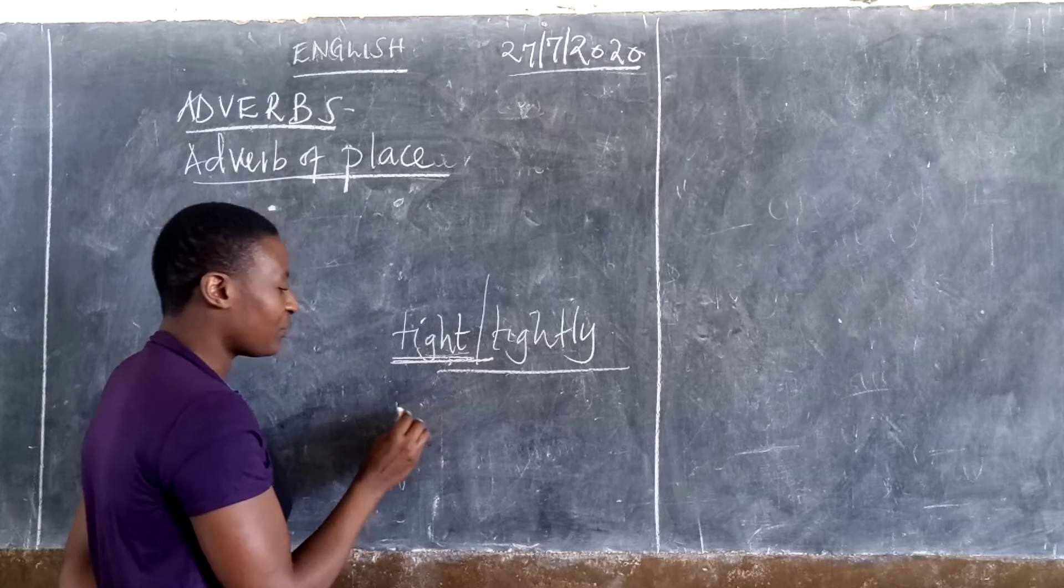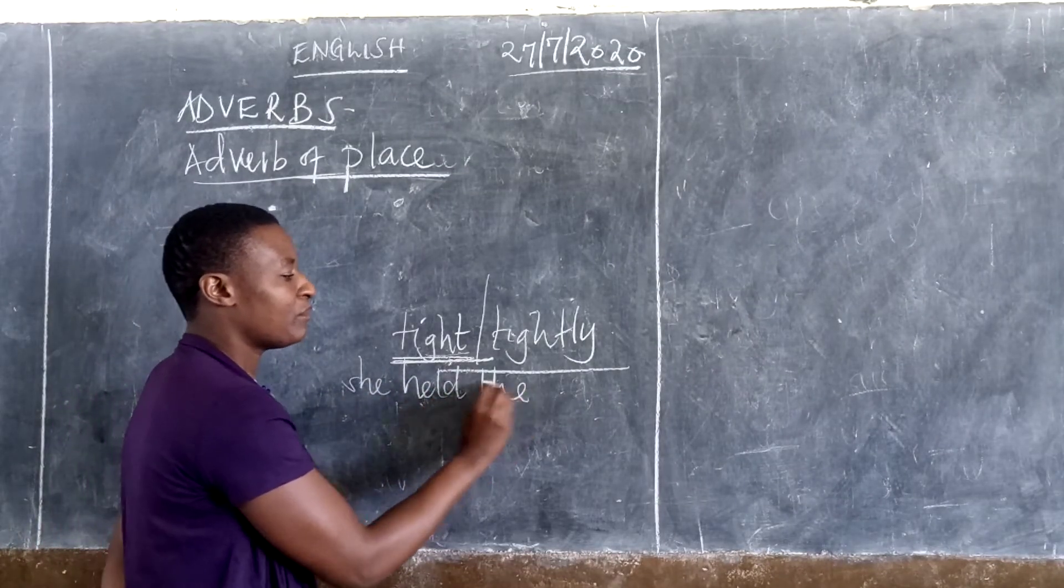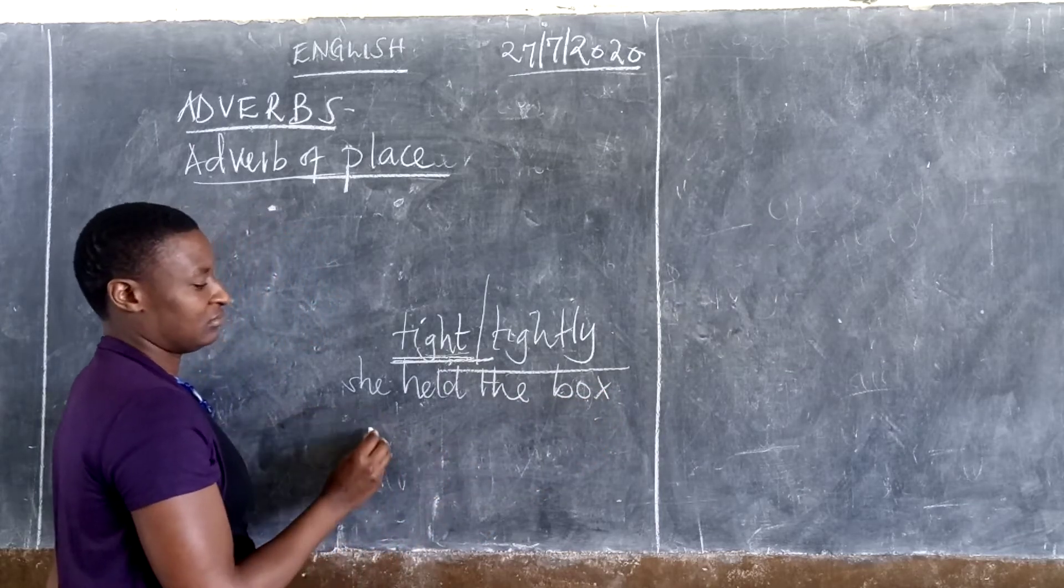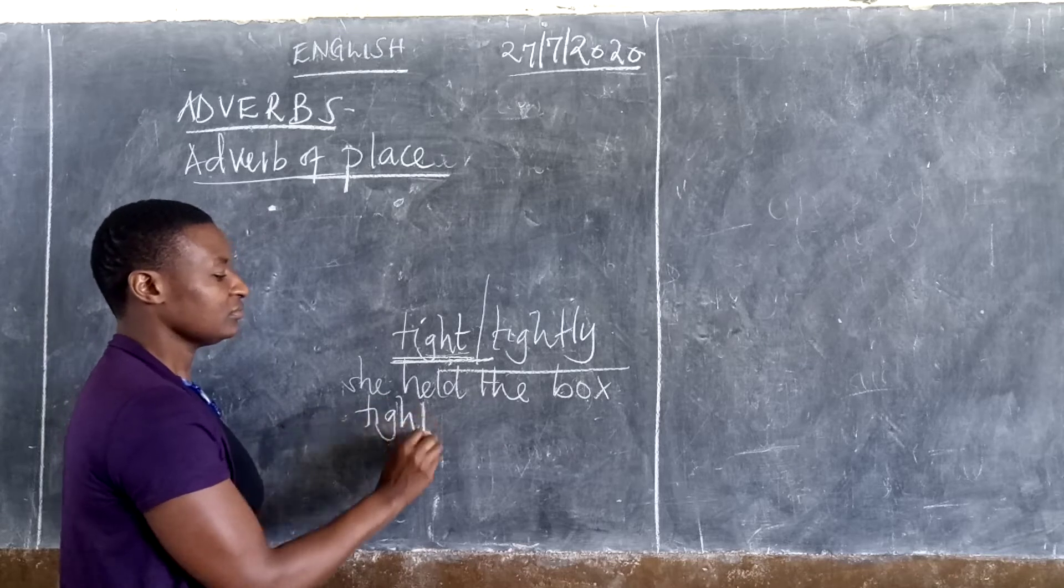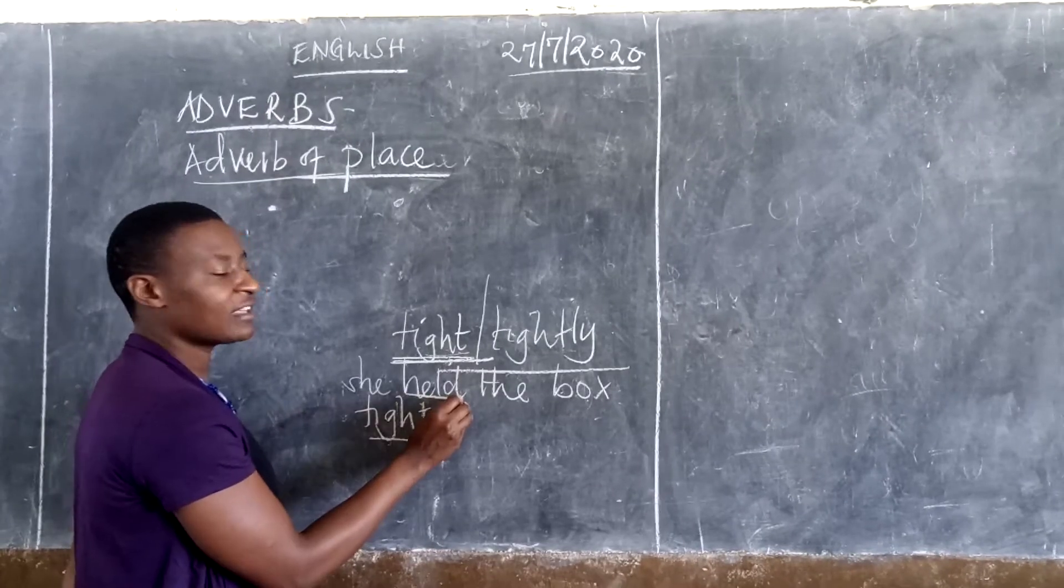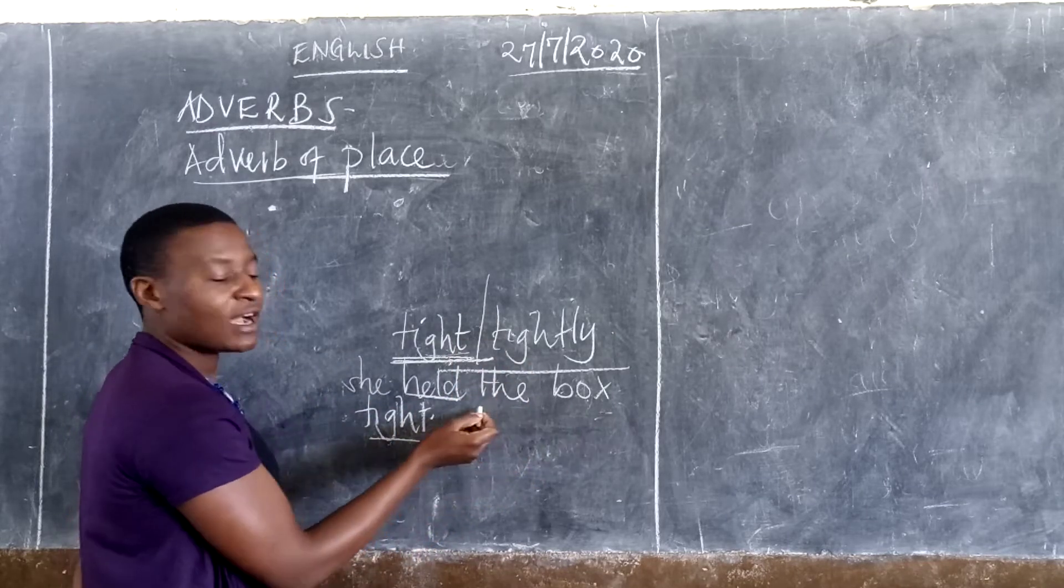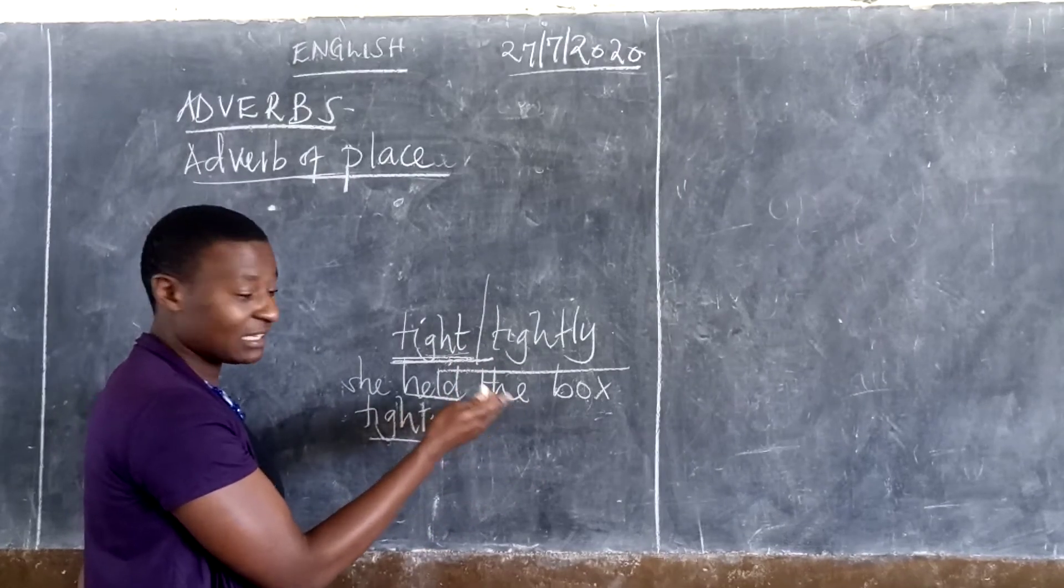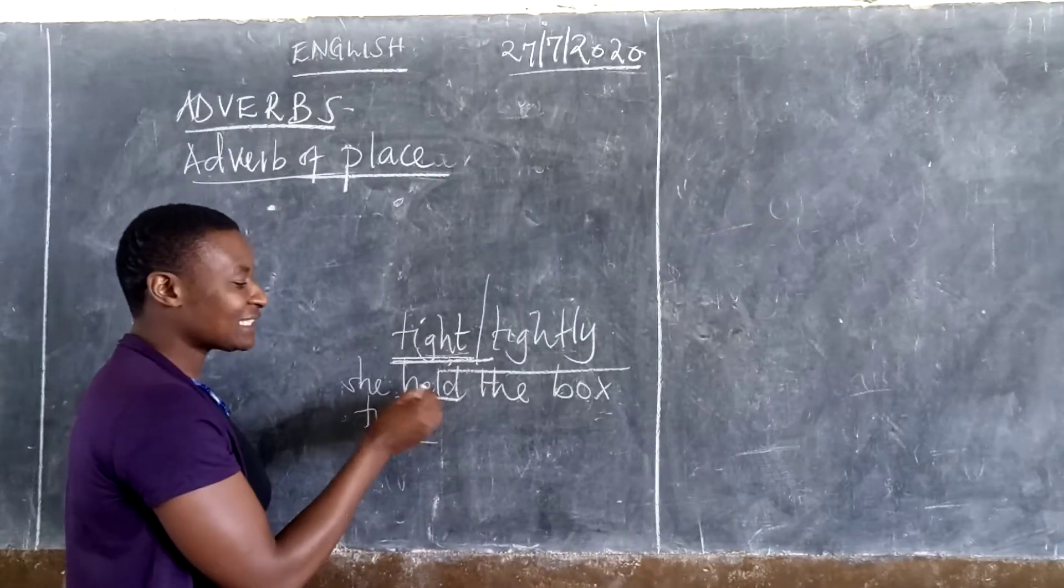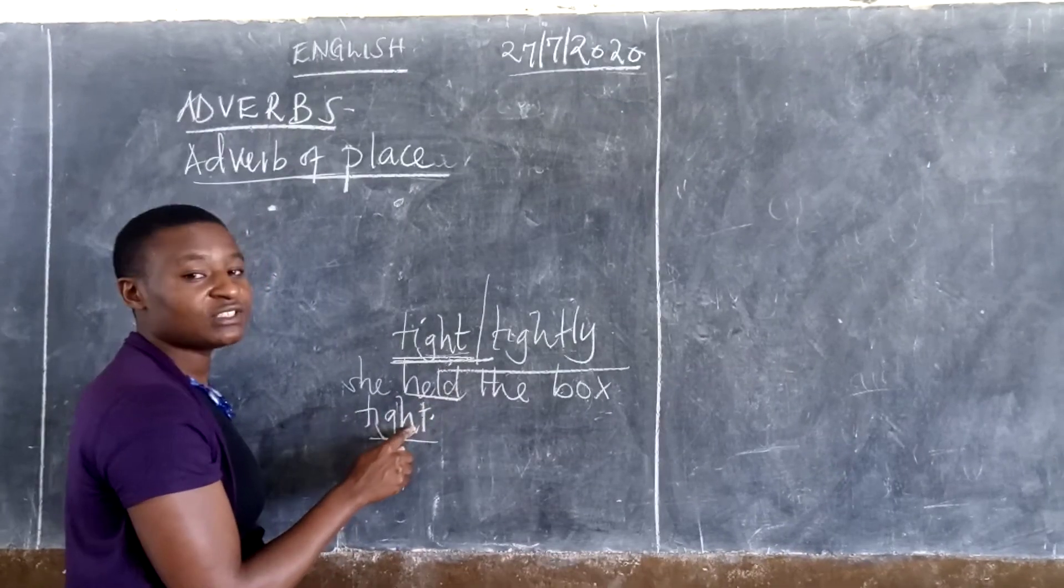For example, she held the box tight. This is how we are going to use our tight. After the verb, when it comes after, regardless of what's being found in the middle, in between the verb and the adverb, no problem. But as long as it has come after the verb, you use tight.